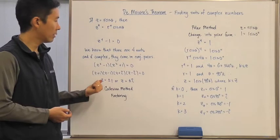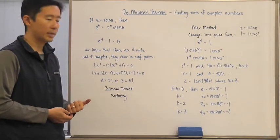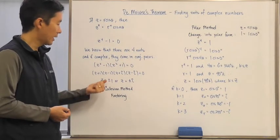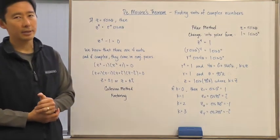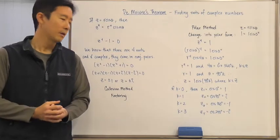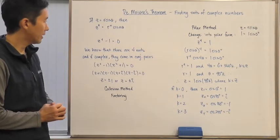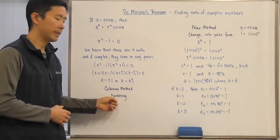And sure enough, we come up with four roots, two which are complex and, of course, conjugates of each other, as z is equal to plus or minus one or z is equal to plus or minus i. Now, that's the Cartesian method of finding the roots because all we're doing is factoring.